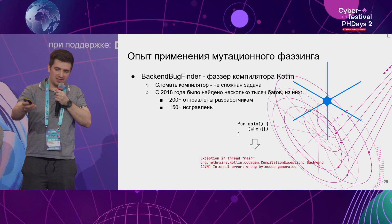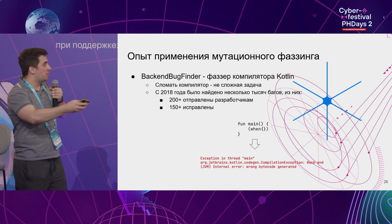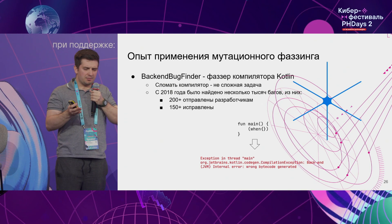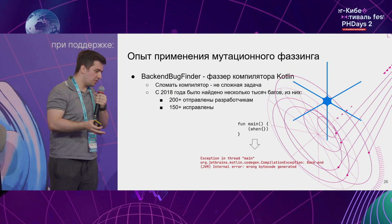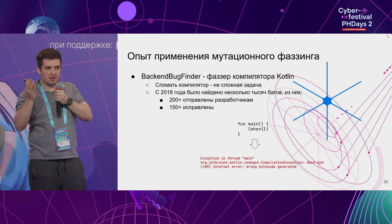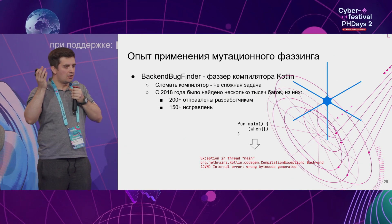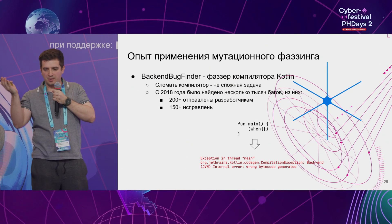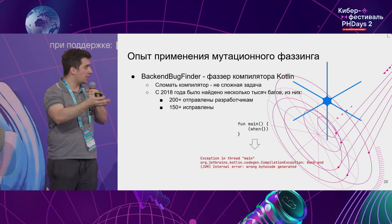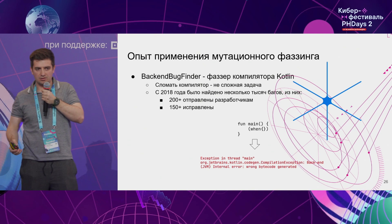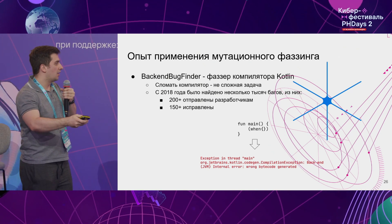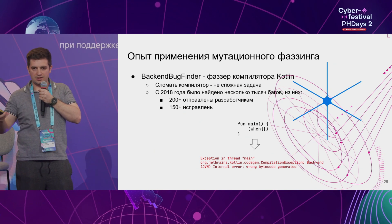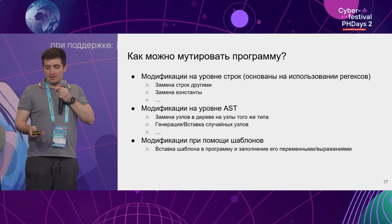I have extensive expertise in the application of mutation fuzzing. Using mutation fuzzing, I was able to find tens of thousands of compiler errors. Around 10% of all bugs found in the compiler backend were found by mutation fuzzing. They are still trying to support it and use it to test new versions of the compiler.